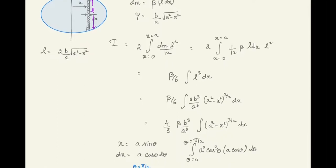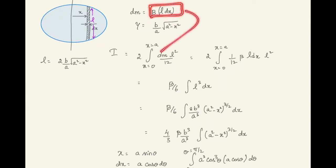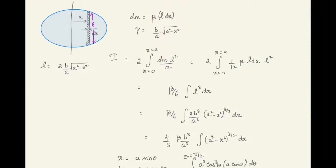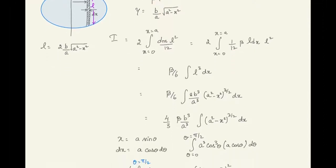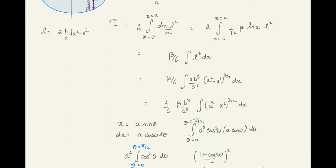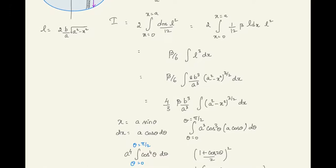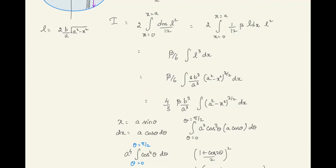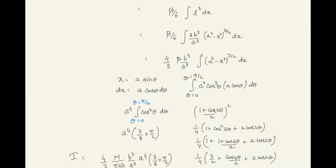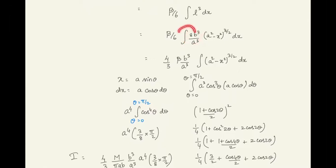Substituting, l = 2·(b/a)·√(a² - x²), so twice the y-coordinate gives the rod's full length. Substituting dm = β·l·dx and simplifying, pulling out constant terms — 1/12 and β come out — we get β/6 times l³·dx. Cubing l gives 8b³/a³·(a² - x²)^(3/2). Pulling out 8b³/a³, the remaining integral to evaluate is ∫₀ᵃ (a² - x²)^(3/2) dx.